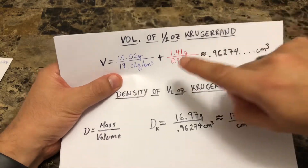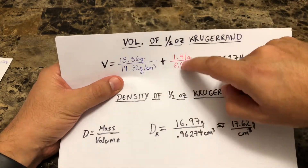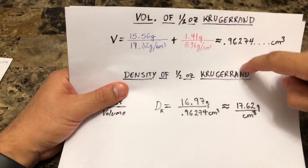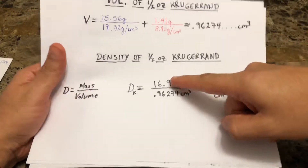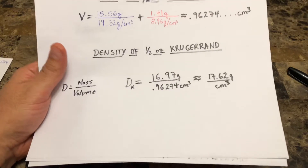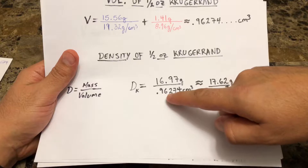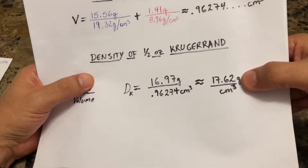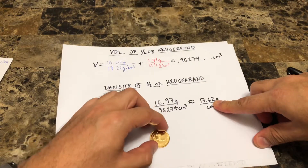This volume is in cubic centimeters — when you divide grams by grams per cubic centimeter, the grams cancel and you're left with cubic centimeters. So the density of the half-ounce Krugerrand: we take the weight of 16.97 grams and divide it by the volume of 0.96274 cubic centimeters, which gives us a value of about 17.62 grams per cubic centimeter.